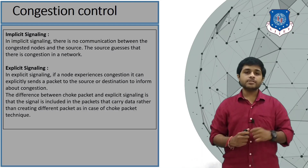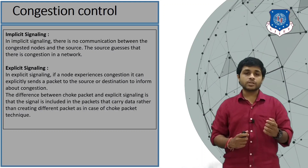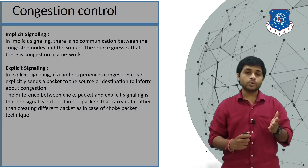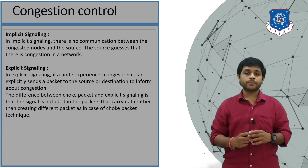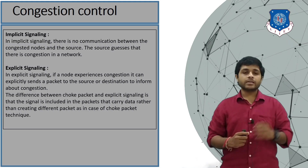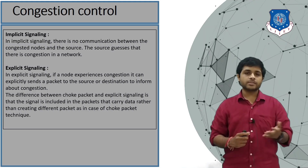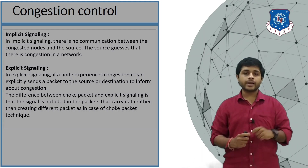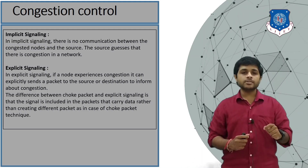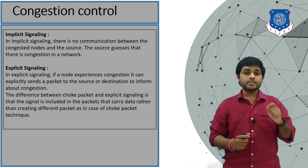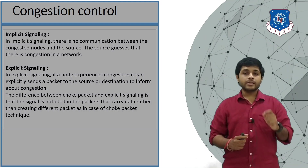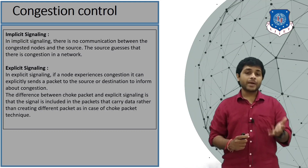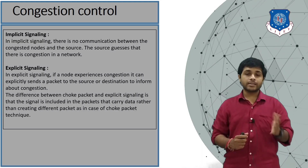The next type is explicit signaling. In explicit signaling, if a node experiences congestion, it can explicitly send a signal to the source or destination to inform about the congestion. The difference between explicit signaling and choke packet is that in explicit signaling, the signal is included within the packet carrying data, whereas in choke packet, a separate dedicated packet is used to inform the sender of congestion.